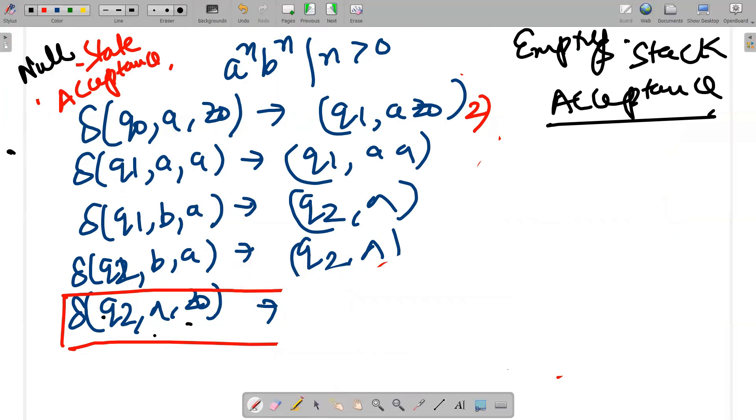q2, null, z0 means q2, no element is left to be processed, and this is your initial pushdown symbol. You don't need to go to final state, you will stay at the state you are. It means q2, you will stay at q2 and you will even pop z0 out.